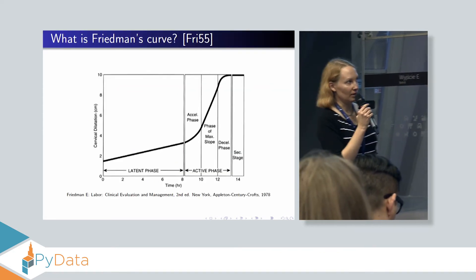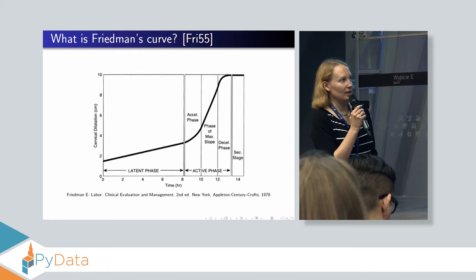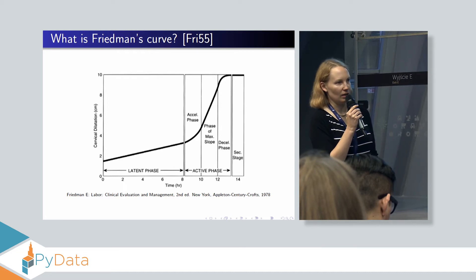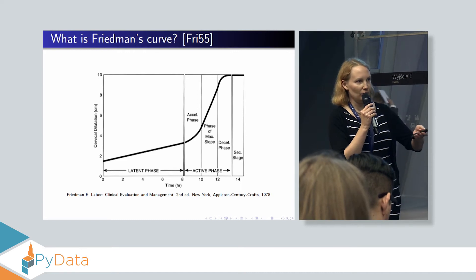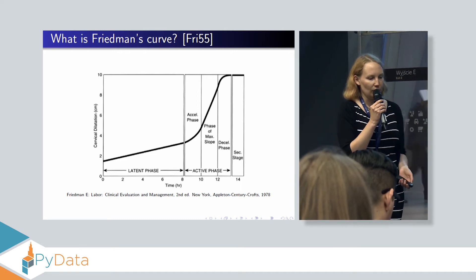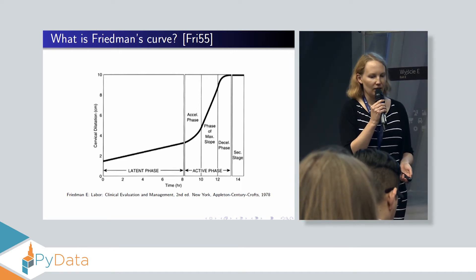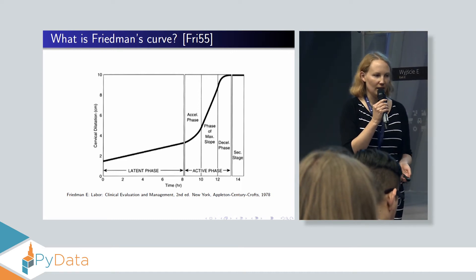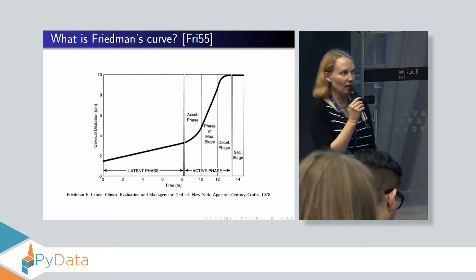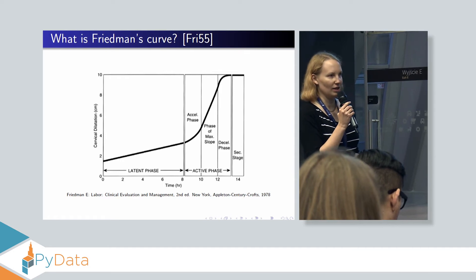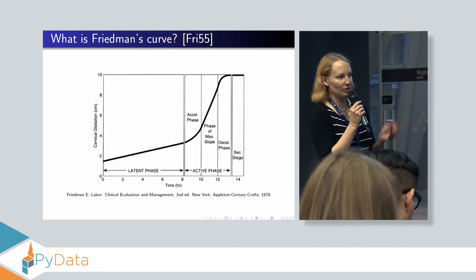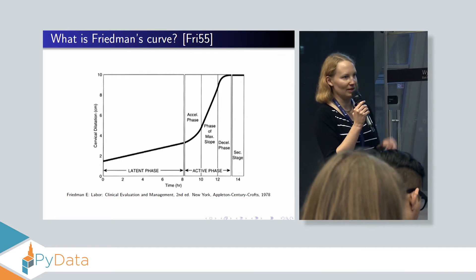What is the Friedman curve? It is a curve where on the x-axis we have time in hours from the start of labor, and on the y-axis we have dilation. And when the dilation reaches 10 centimeters, boom — baby comes out.